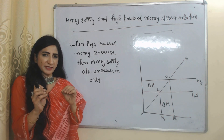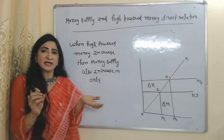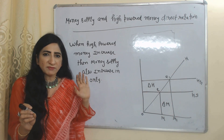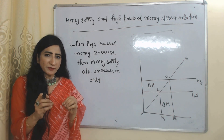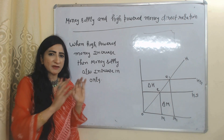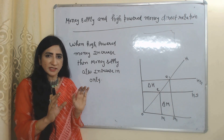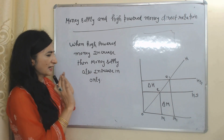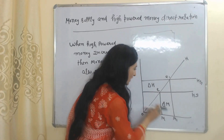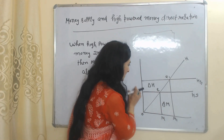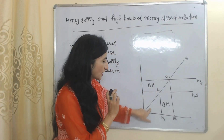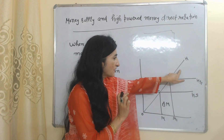So high powered money is our monetary base. With this monetary base, banks expand more money in the economy and money supply increases. We can say that as high powered money increases, money supply will also increase. We can see the same thing in this diagram — on the x-axis we have money supply, and on the y-axis we have high powered money.